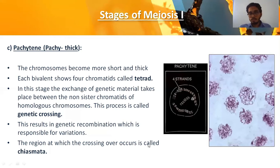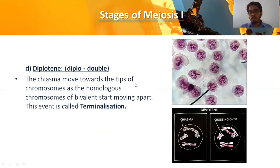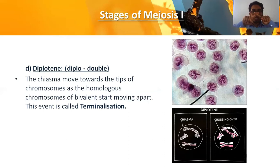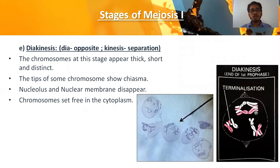After pachytene, the fourth sub-stage is diplotene — 'diplo' refers to double. The chiasma moves towards the tip region of chromosomes as the homologous chromosomes of the bivalent start moving apart. This event is called terminalization, where the chiasmata reach towards the tip region of the chromatid arms.